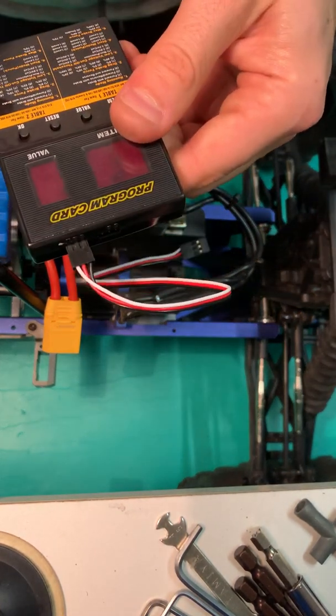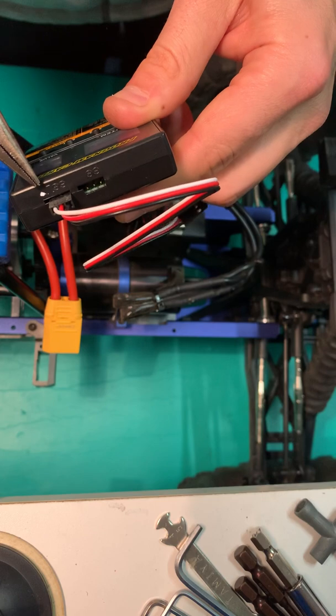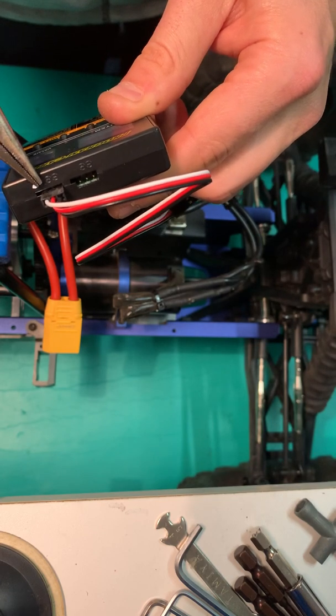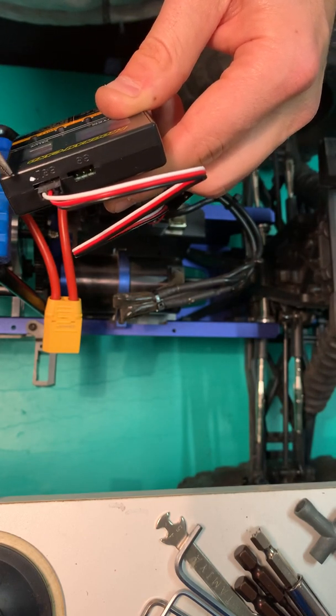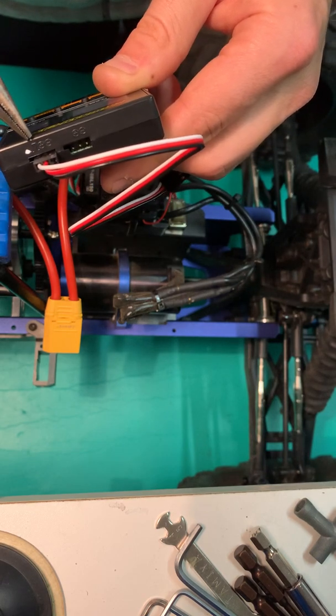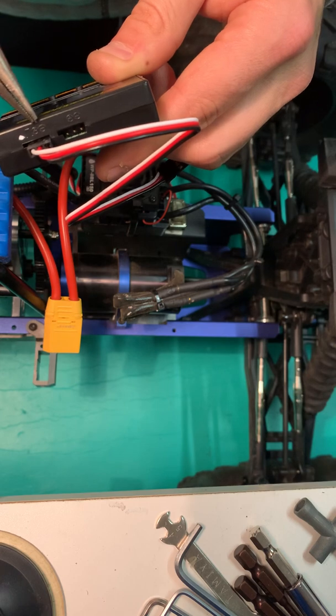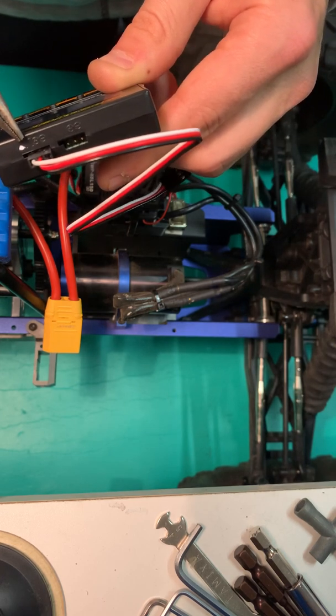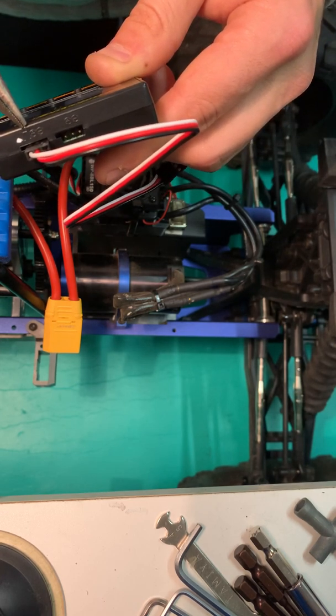On the program card you'll see there's two ports. We're using the one very close to the edge and it goes like this. There's actually a picture there telling you what to do. Signal, positive, negative.